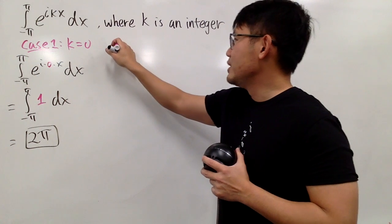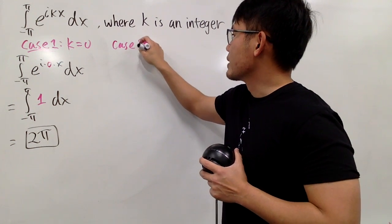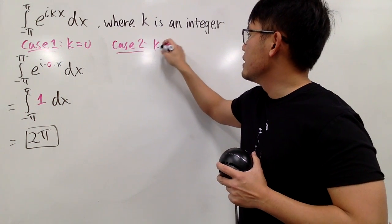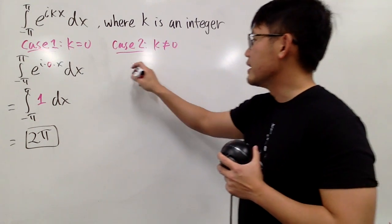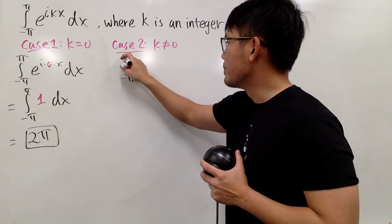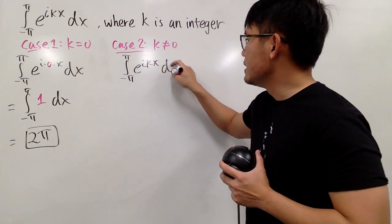Now, for the second case, we just have to deal with the k. So case 2 is when k is not equal to 0. Well, let me write that down right here again. The integral from negative pi to pi, e to the ikx dx.